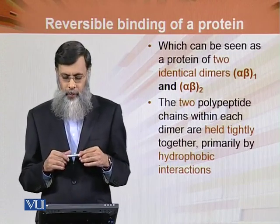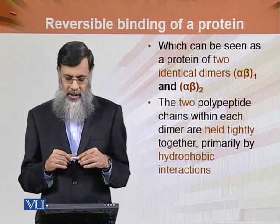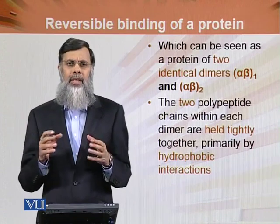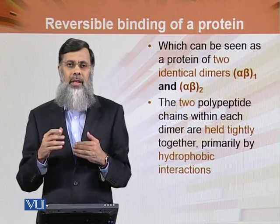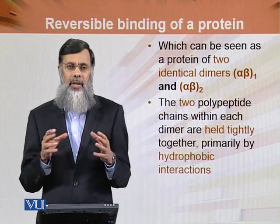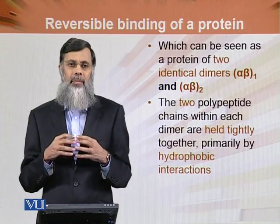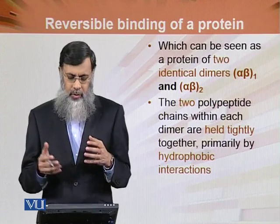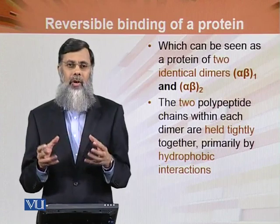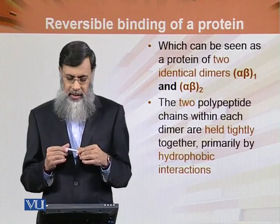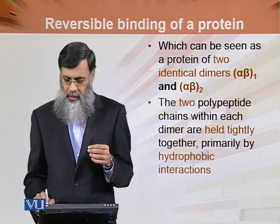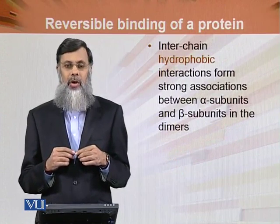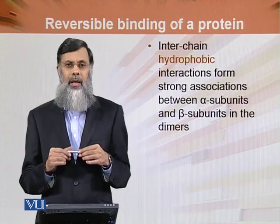The two polypeptide chains within each dimer are held tightly together primarily by hydrophobic interactions. We have seen primary, secondary, tertiary, and quaternary structures of proteins. The quaternary structure involves interactions between two polypeptide chains, and interchain hydrophobic interactions form strong associations between alpha subunits and beta subunits.